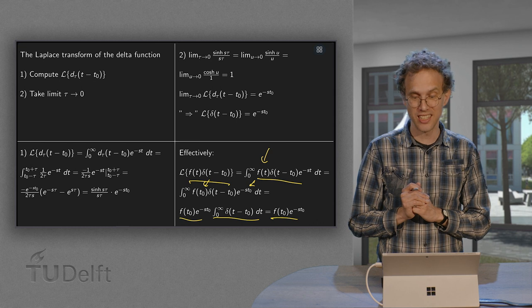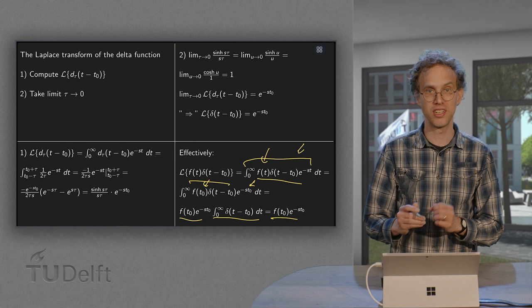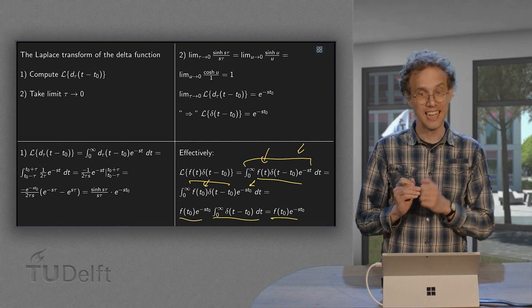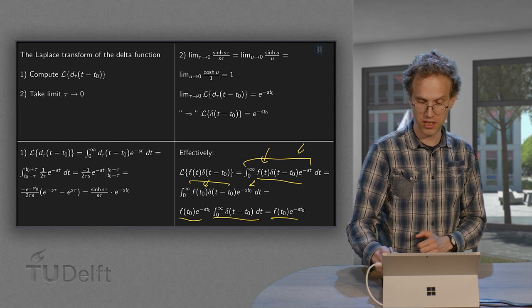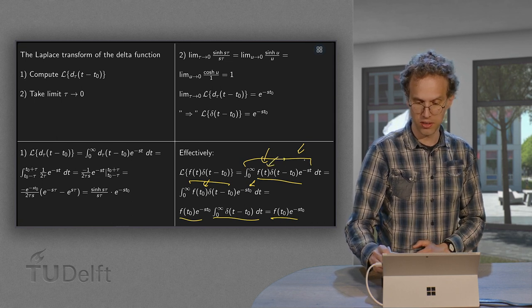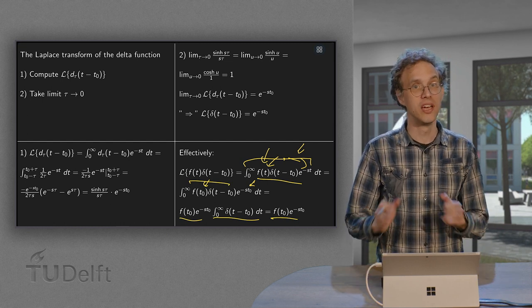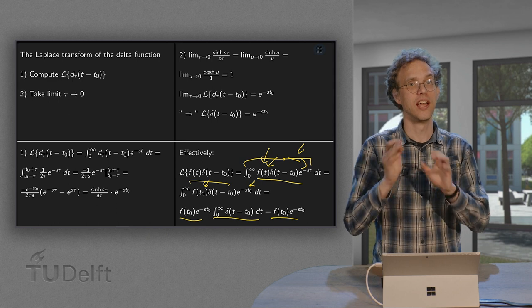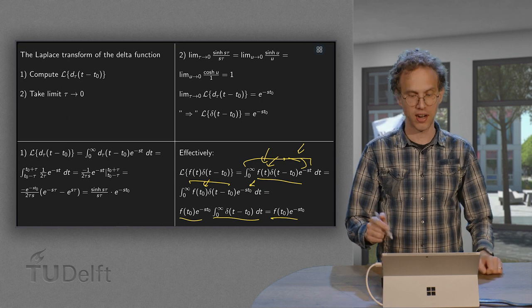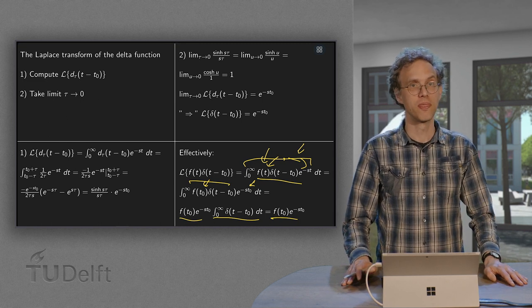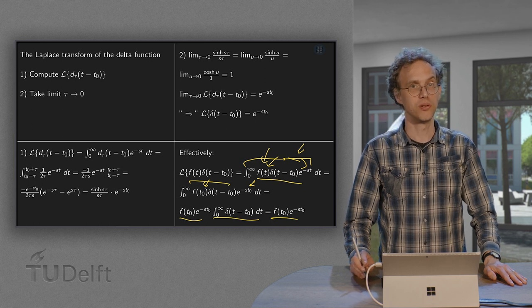So what does this delta function do? You can go back to this step over here. What does the delta function do? It eats the integral and it sets the integration variable t to t₀. So that is how the delta function works. So a delta function inside an integral is actually very nice. It cancels the integral and basically sets the integration variable everywhere to t₀. So that is how we can use a delta function and use its Laplace transform.